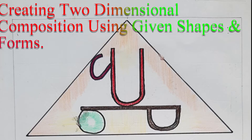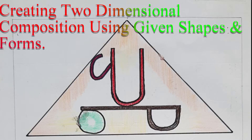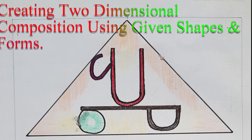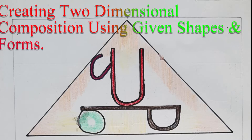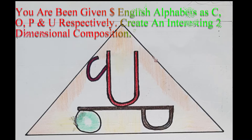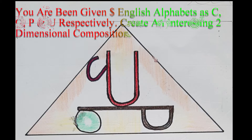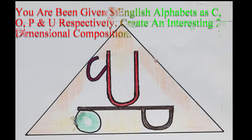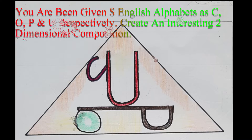The fifth topic is creating interesting two dimensional composition using given shapes and forms. For example, you are given four English alphabets: C, O, P, and U respectively. Make an interesting two dimensional composition of the given objects.